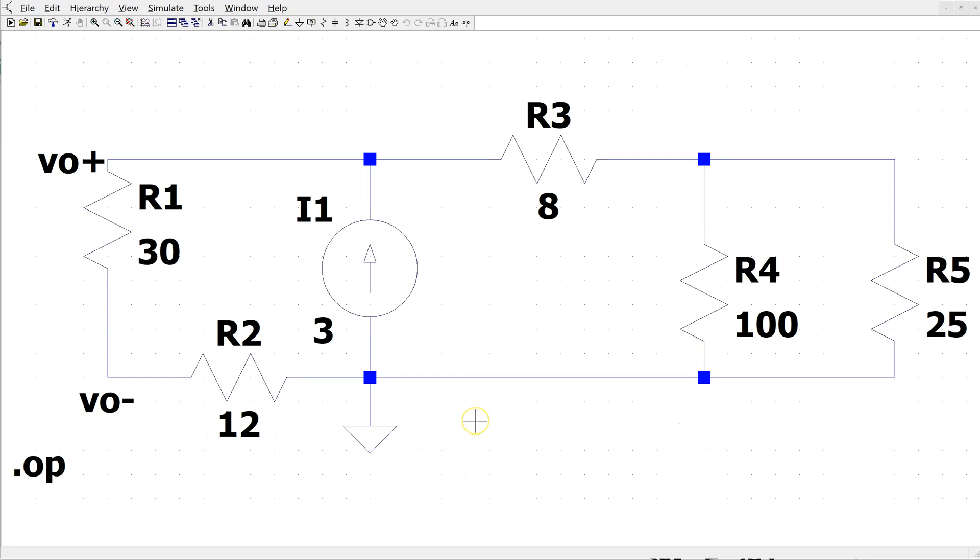This is the same circuit constructed in LTSPICE. When we simulate, we can see that V0 is 50.4 minus 14.4,